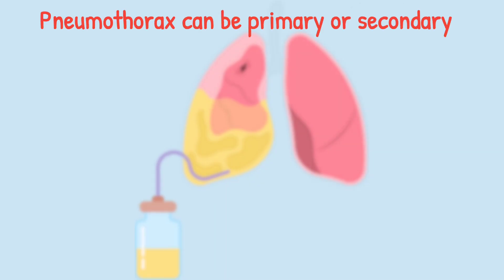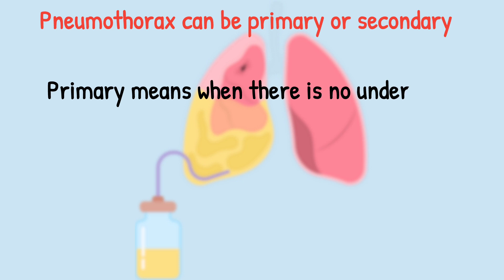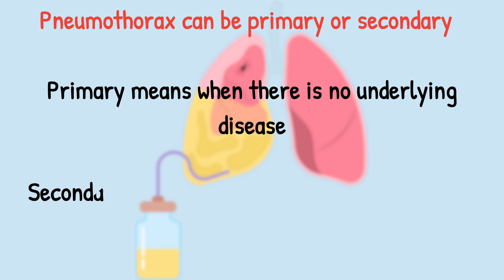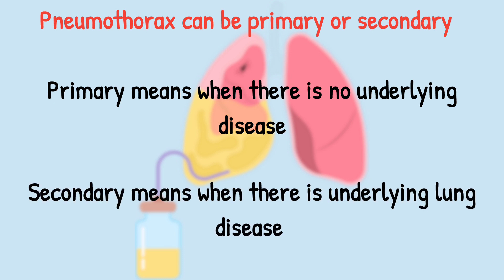Pneumothorax, as we discussed in the previous video, can be primary or secondary. Primary means there is no underlying lung disease, and secondary means there is some underlying lung disease going on.